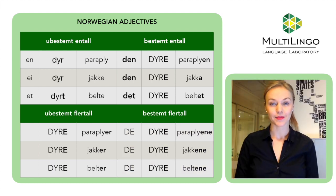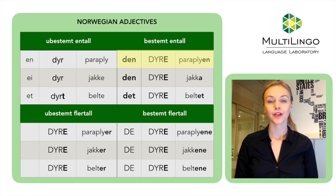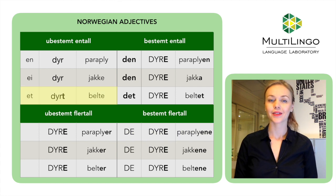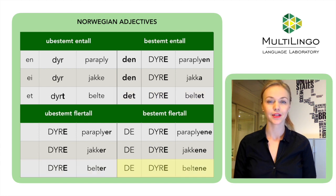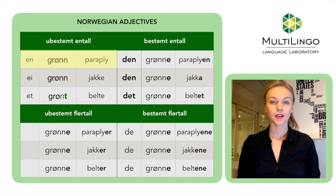Let's take another example. Let's say that all these things are expensive. The adjective 'dyr' will behave in just the same way. En dyr paraply — an expensive umbrella. Den dyre paraplyen — the expensive umbrella. Dyre paraplyer — expensive umbrellas. De dyre paraplyene — the expensive umbrellas. And one more adjective: green. En grønn paraply, den grønne paraplyen. Grønne paraplyer, de grønne paraplyene.